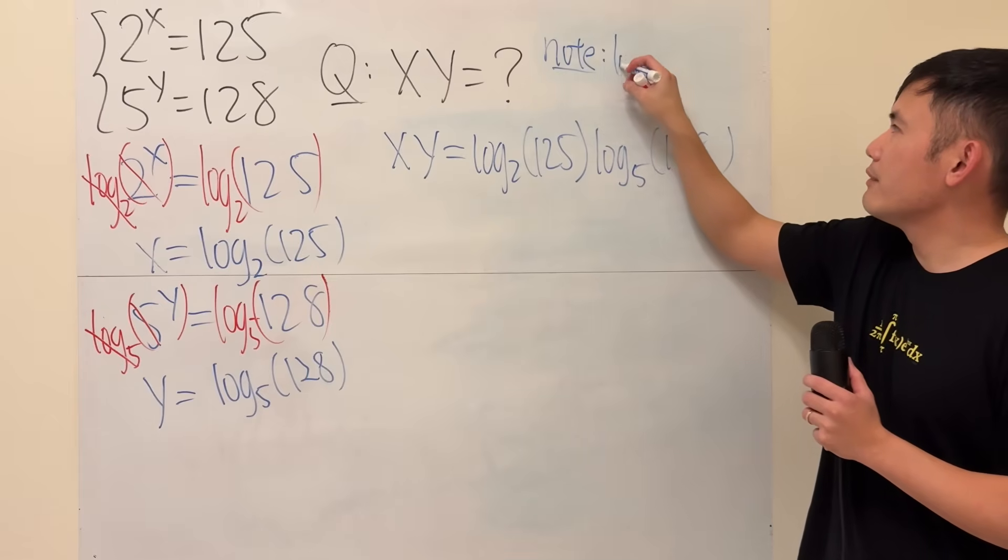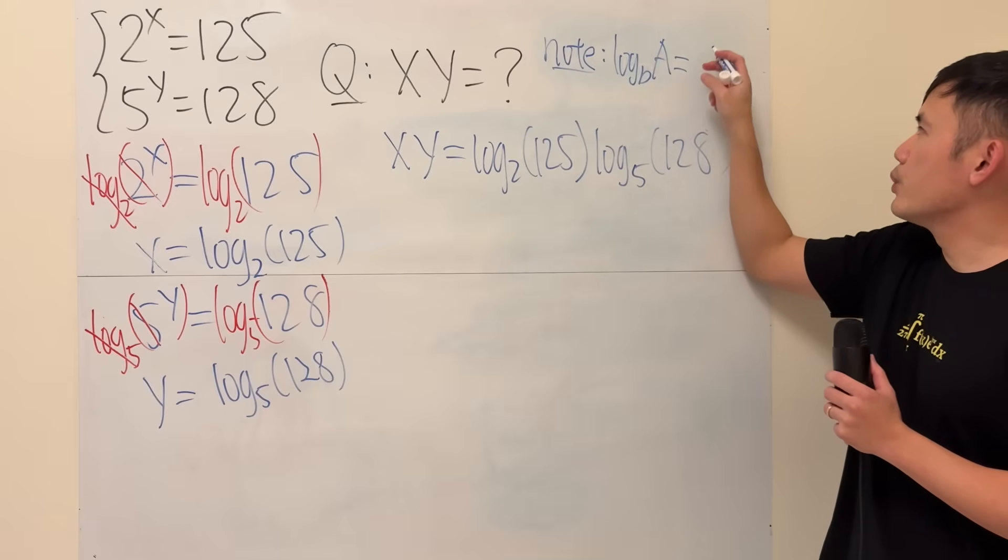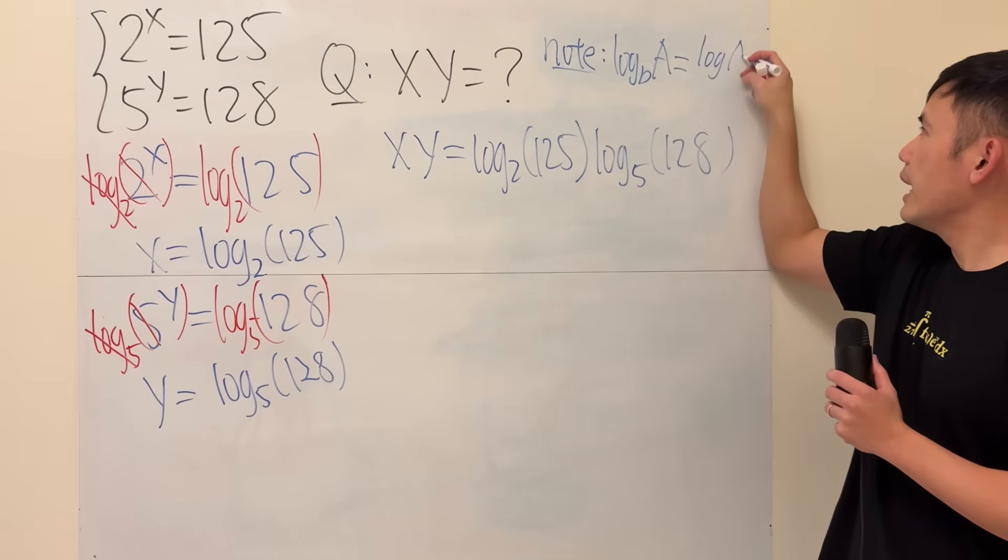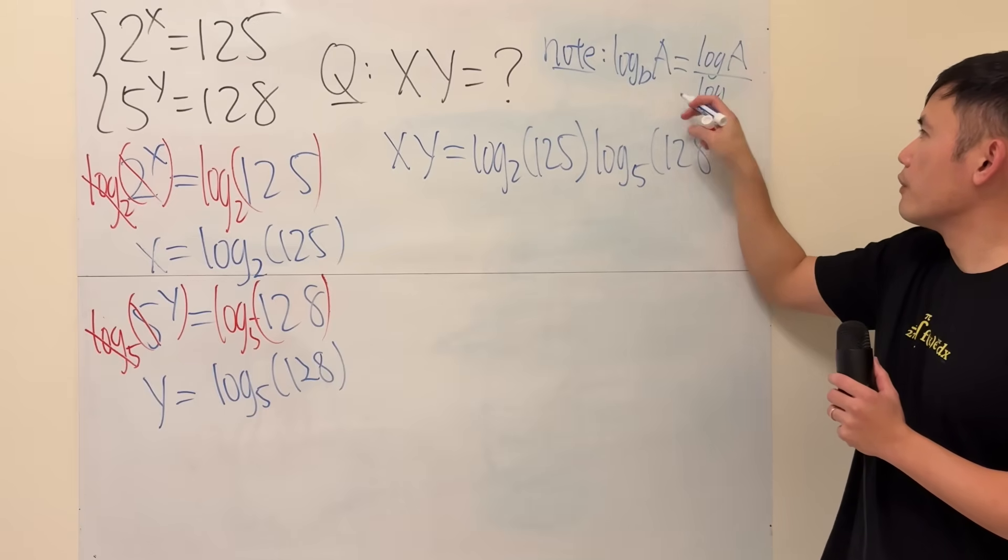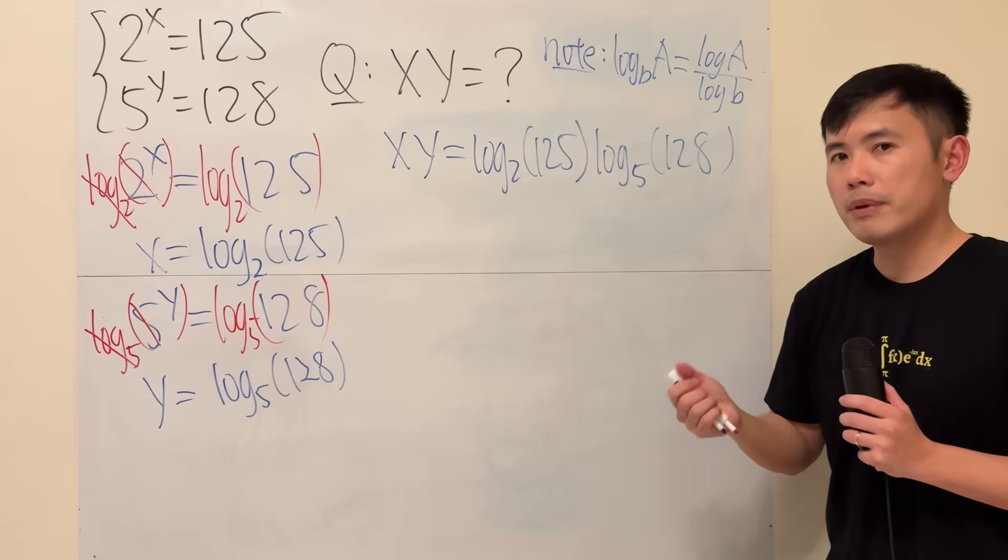Note, if we have log of some base b of some input a, this is equal to log of a over log of b. And notice that these two log are just the regular log, log base 10.